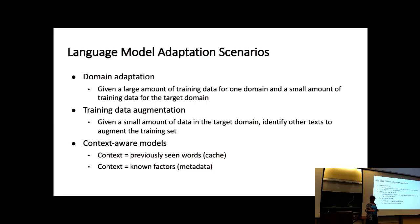What we're doing now is saying: language is described by all these different factors, and we're going to account for those factors. We're going to pull together data from different sources and account for those different factors, so things share what they can share and have correction terms for the things that are different.